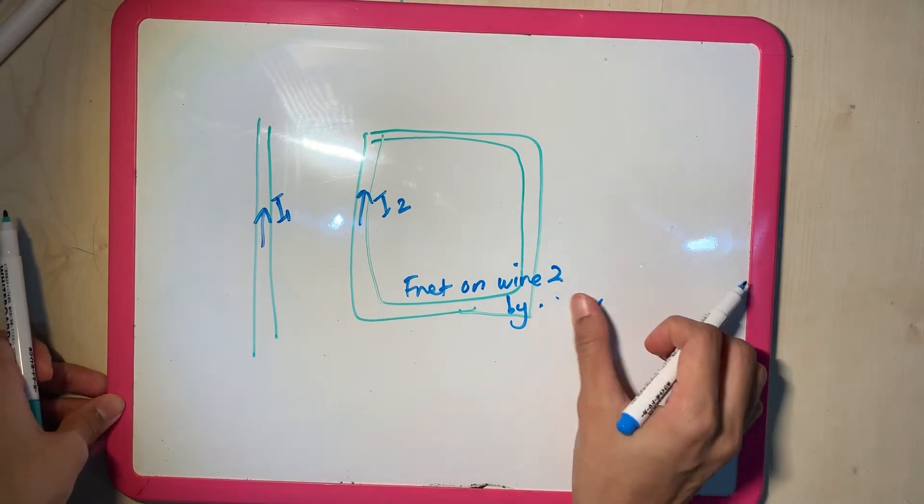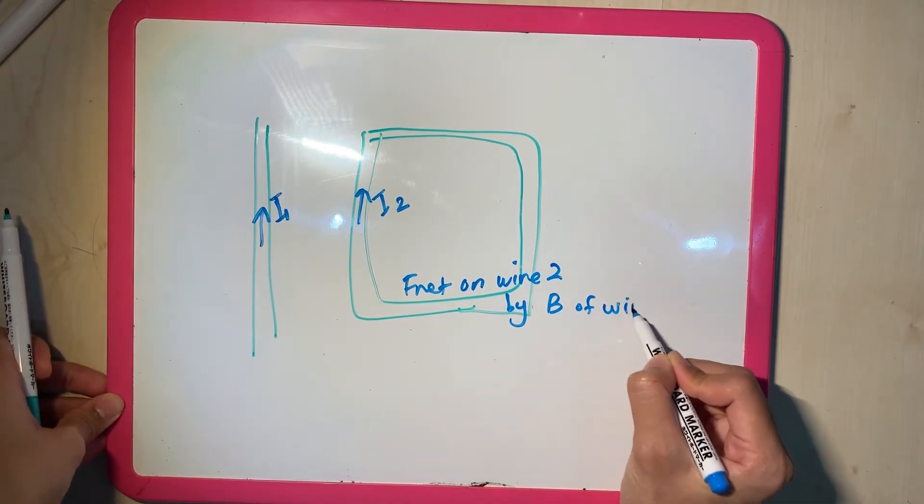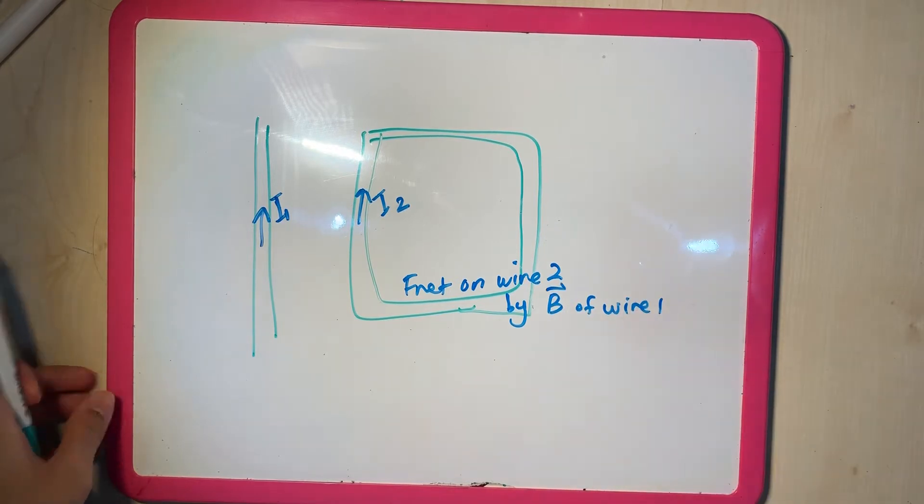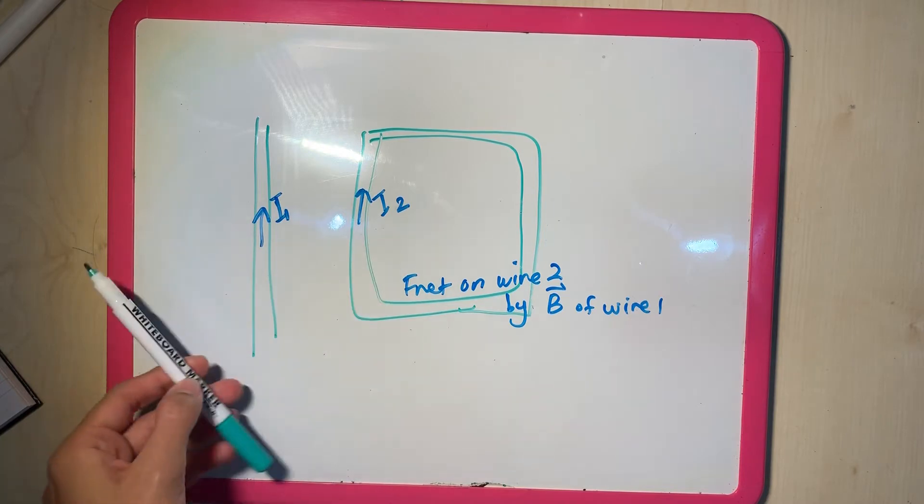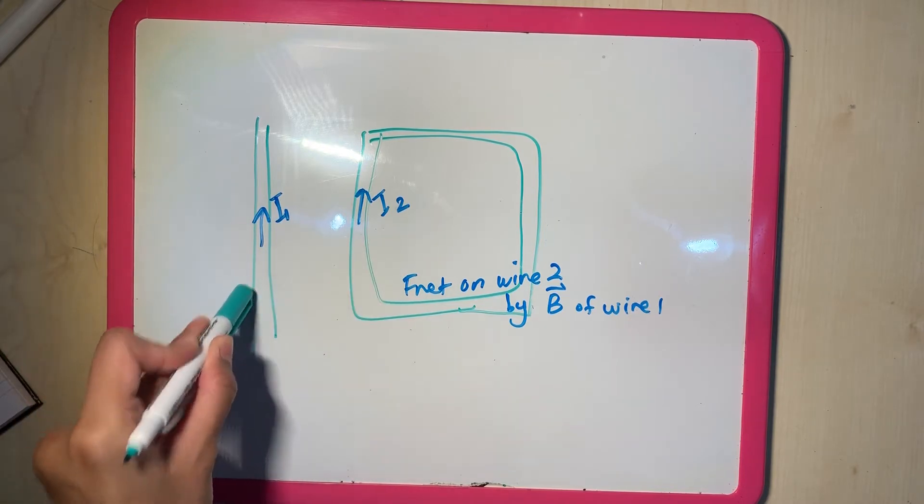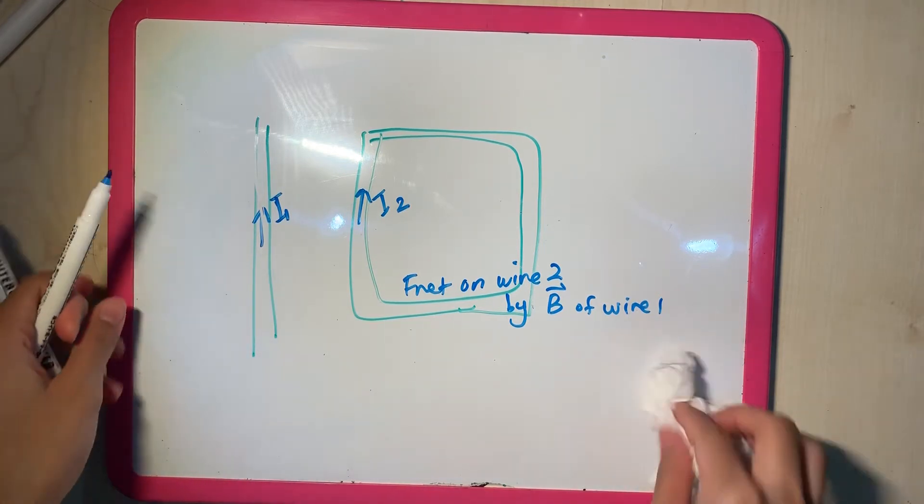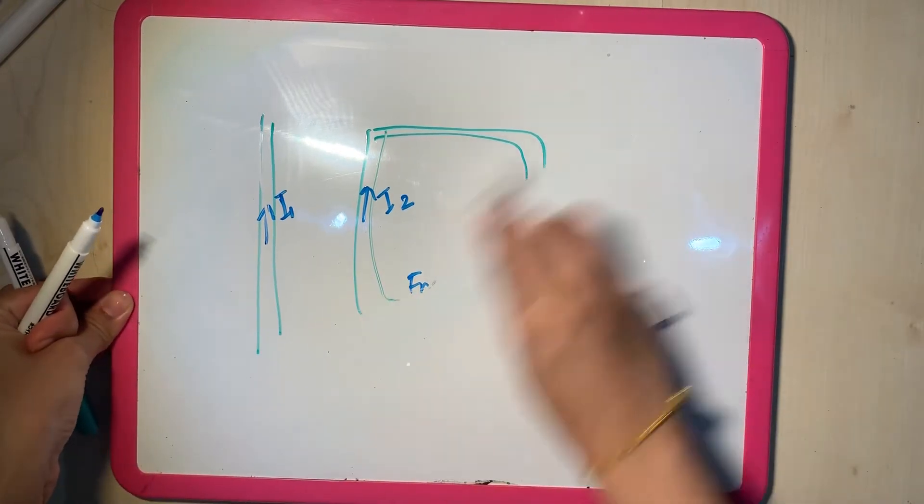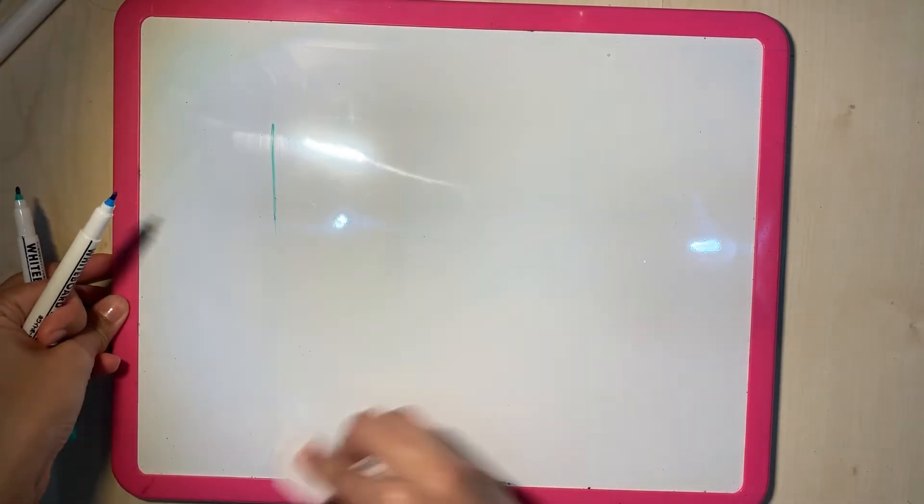By the B of wire 1. So what is the F net on wire 2 exerted by the magnetic field of this guy? That is the question. So before we tackle this question, let's do a little recap on what does a straight wire do? How does it produce B? What is B? What is the direction?